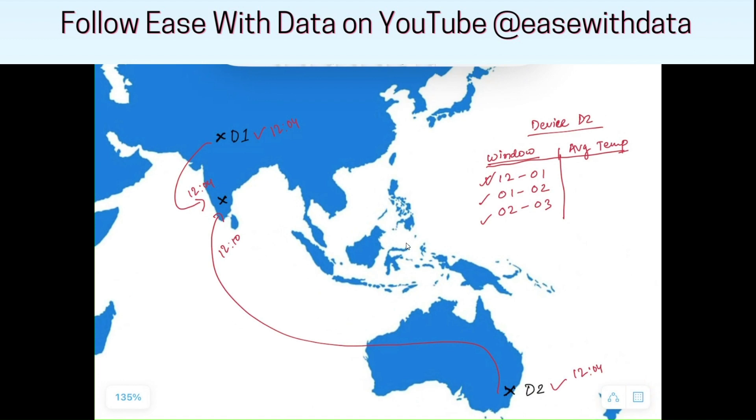But consider if, because of geographical reasons, the data from Sydney arrives late by 30 minutes or 1 hour at Bangalore for processing. Consider the data arrives at 1:10. In this case, the average calculation for this data with processing time will go to the second window, not the first window. But this is wrong because the data was generated at 12:04, so it should come within the same window of 12 to 01. But it has been processed at 1:10, which is why it is coming to the second window.